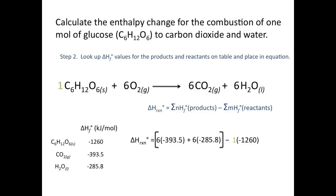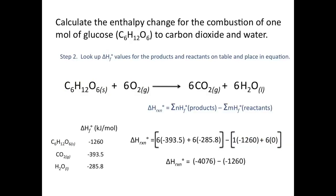We then subtract the reactant values. We have one mole of glucose multiplied by its ΔHf° of −1260 kJ/mol, and oxygen contributes zero as an element in its standard state. Be very careful with negative signs and parentheses in your calculator. Working step by step gives a final ΔH_reaction of −2816 kJ/mol.